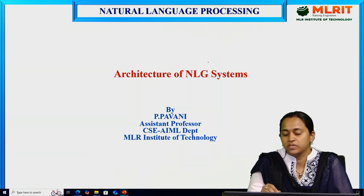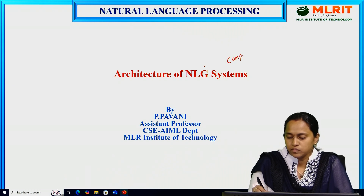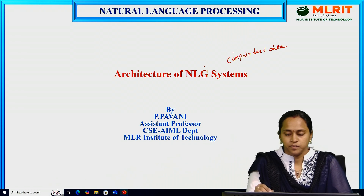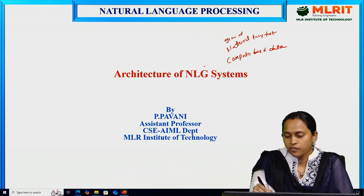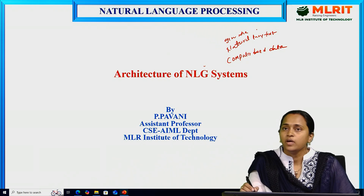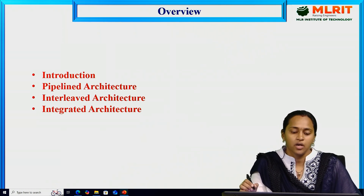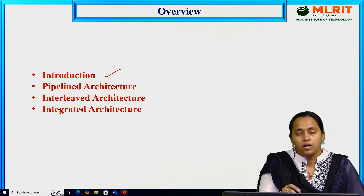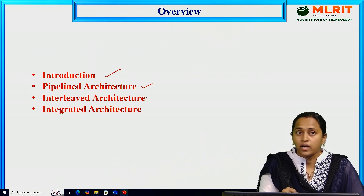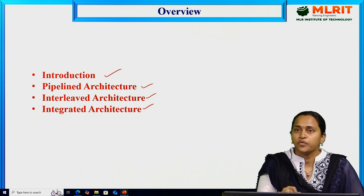So, what is the meaning of natural language generation? We can generate natural language text from computer-based data. This is the meaning of natural language generation. The overview of today's session covers the introduction to the architecture of NLG and the types of architectures: pipeline architecture, interleaved architecture, and integrated architecture.